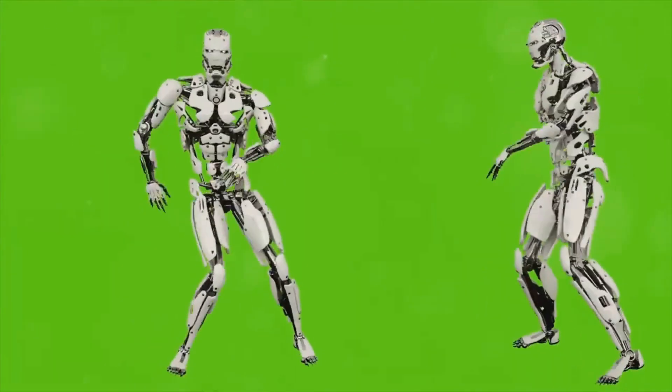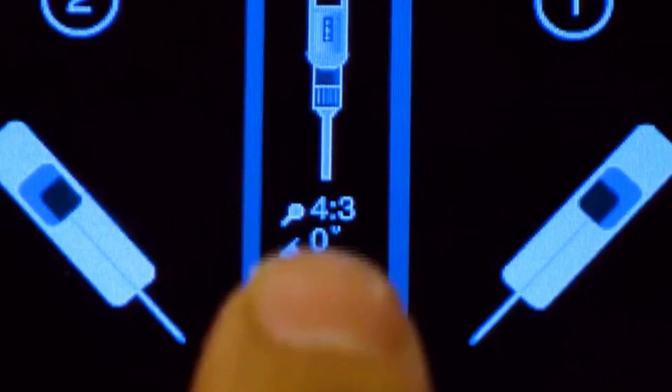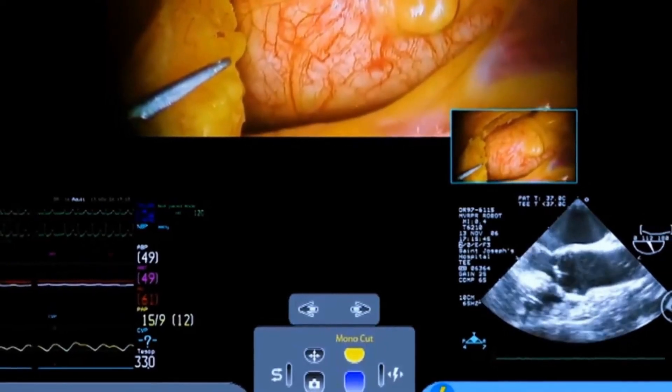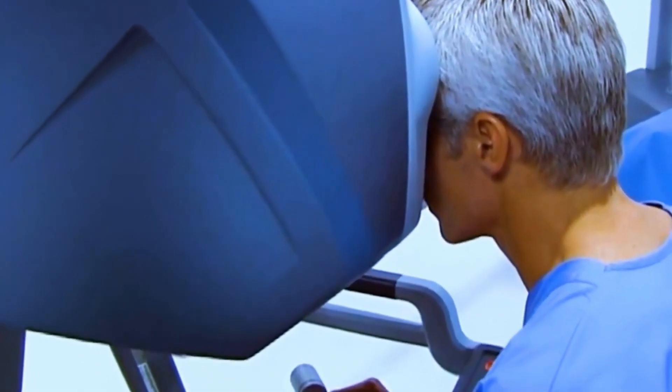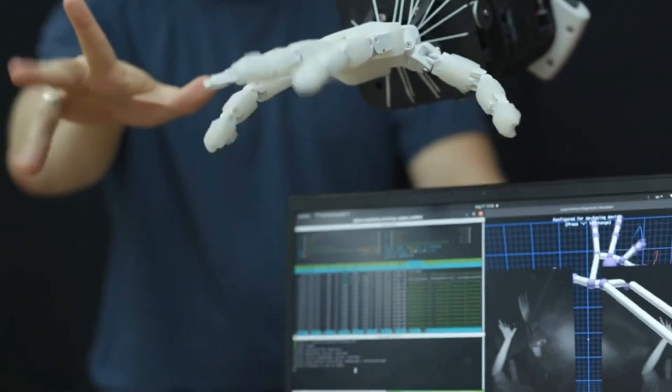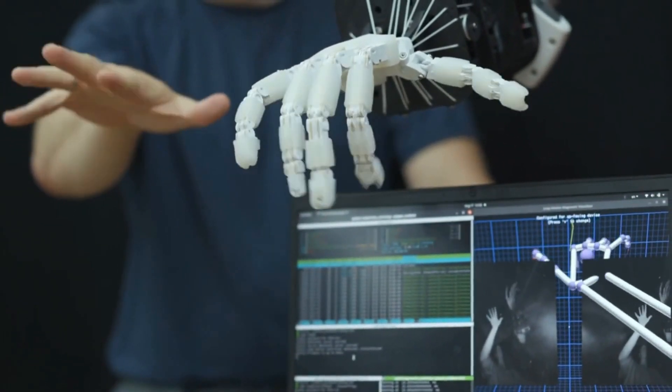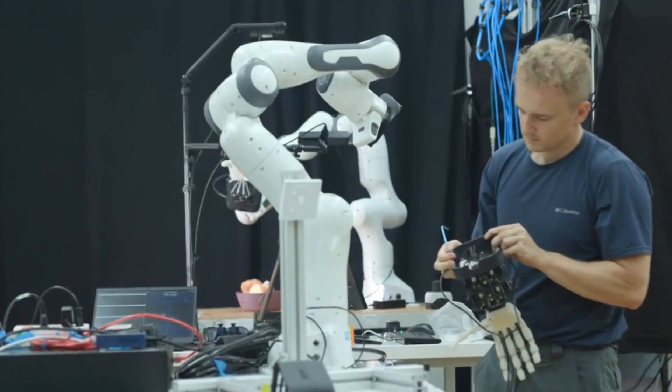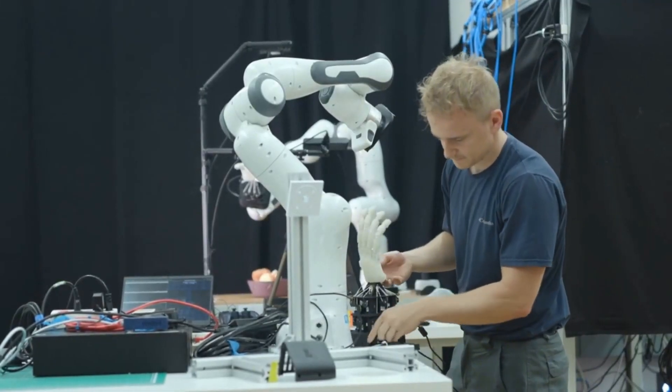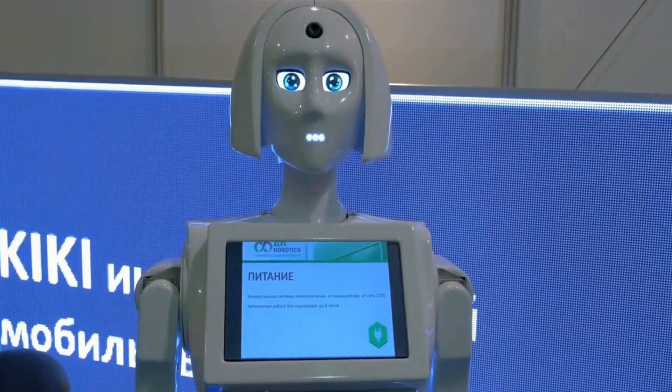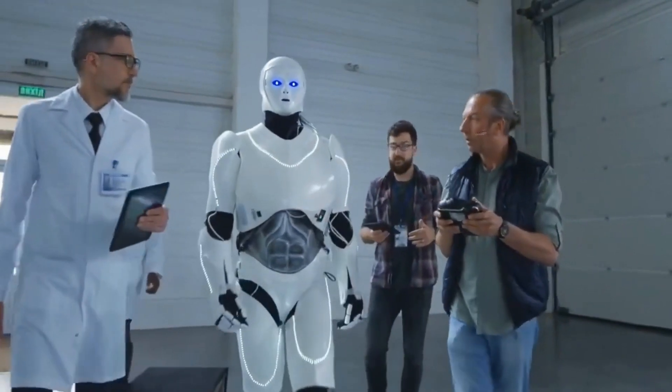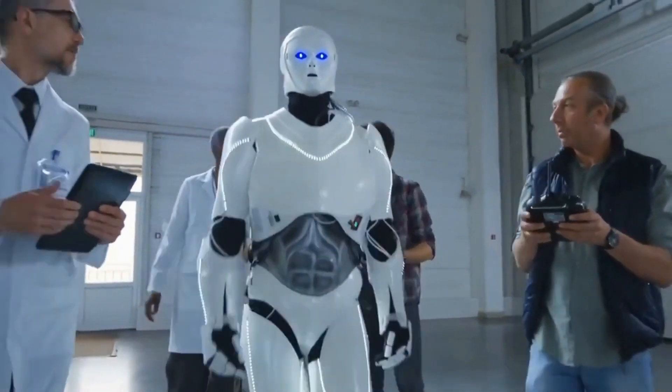For example, imagine a robot capable of performing extremely precise surgeries without the concern of fatigue or human error. In addition, they could be fundamental in the physical rehabilitation of patients assisting in physical therapy exercises with consistency and safety. This type of advancement in medicine could completely transform the experience of patients and the functioning of health institutions.